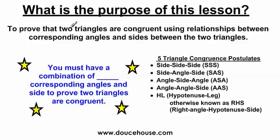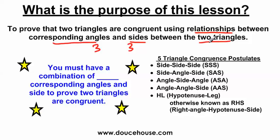What is the purpose of this lesson? To prove that two triangles are congruent using the relationships between corresponding angles and sides between two triangles. Every triangle has three angles and three sides — that's a total of six angles and sides. But to compare two triangles and see if they're congruent to each other, you only need a combination of three corresponding angles and sides.